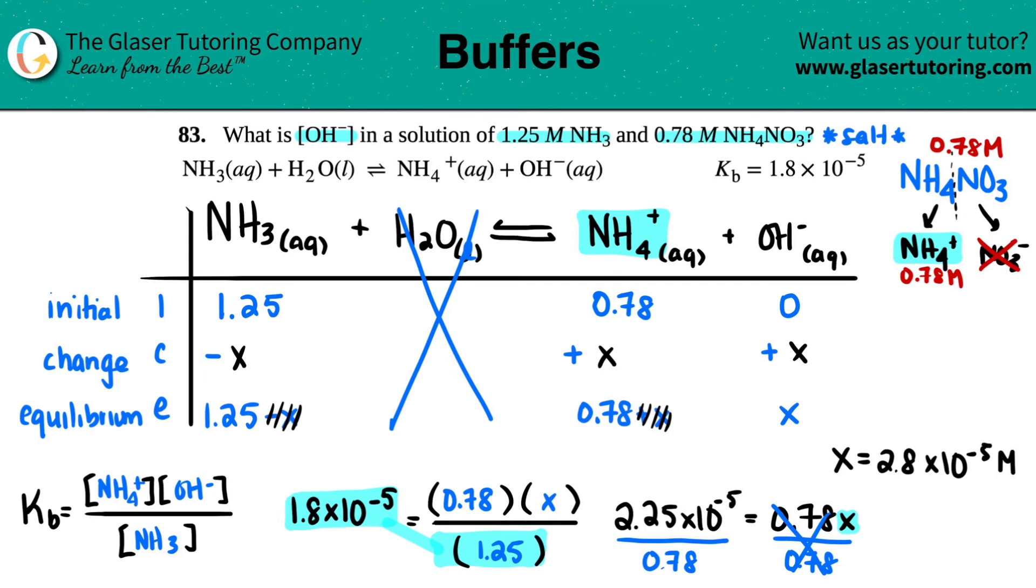And keep in mind that the x value was the hydroxide. So the OH- concentration equals 2.8 times 10 to the negative fifth molarity.